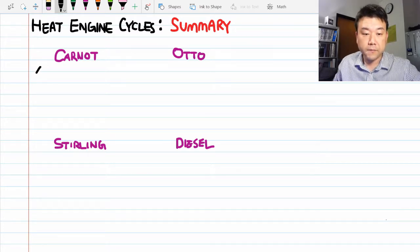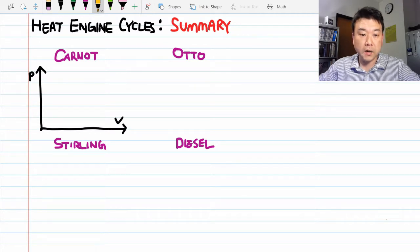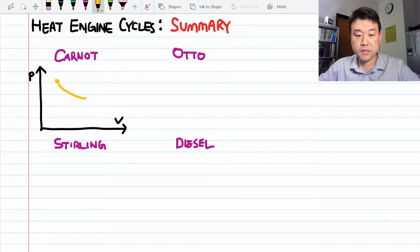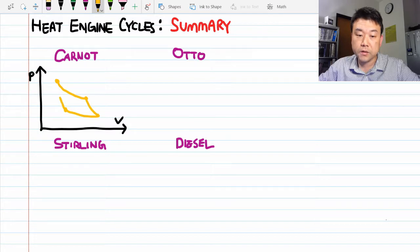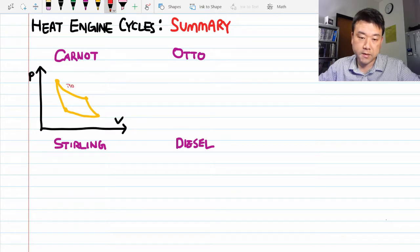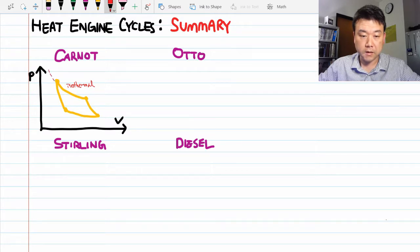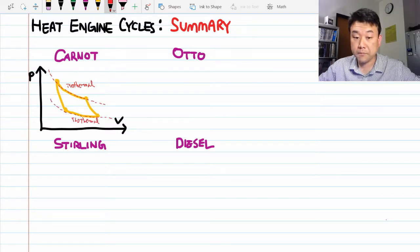Here's the PV diagram for the Carnot cycle. Starting from high pressure, low volume, the gas first undergoes isothermal expansion. Then the expansion continues adiabatically. Then the gas is contracted isothermally, and at the right point the gas continues compression adiabatically with increasing temperature, eventually reaching the initial starting point. The isothermal process happens along an isotherm, and while the gas changes temperature, the heat exchange with the surroundings is zero because it's adiabatic.